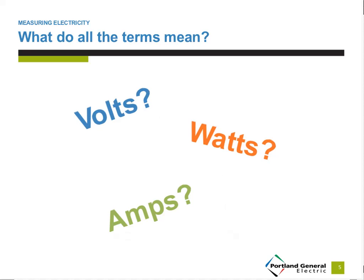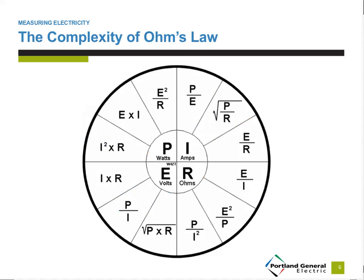Volts, watts, and amps — the basic three terms of electricity needed for calculating energy costs. These terms come from Ohm's Law, which is a more complex and complete measurement of electrical energy fundamentals. Sometimes you may be in a room with experts and their terms will be slightly different. For example, volts may be shown as the letter E instead of V, amps may be shown as the letter I instead of A, and watts may be shown as the letter P instead of W.